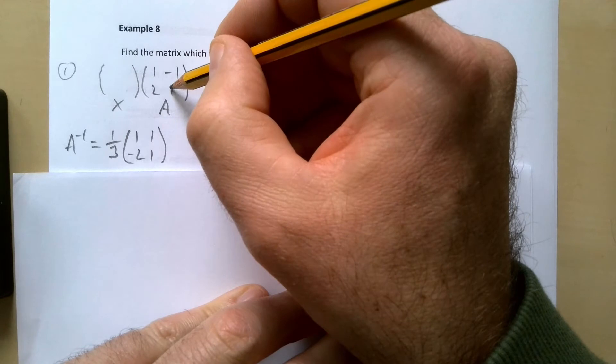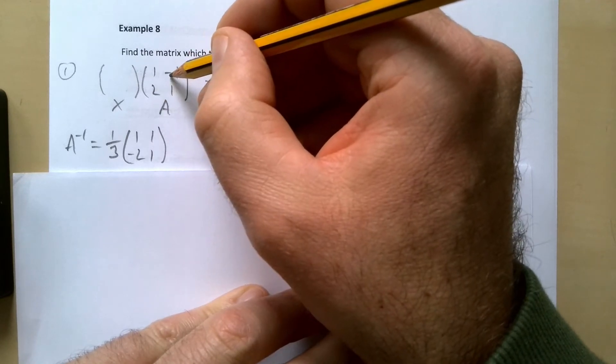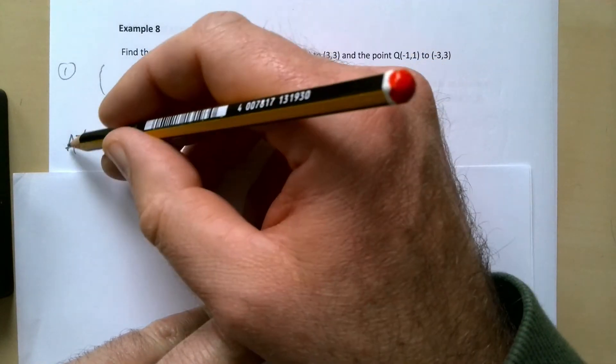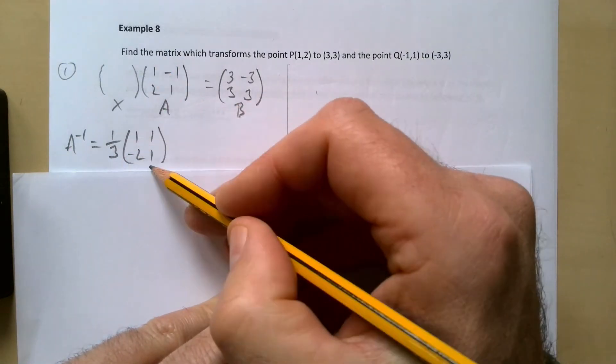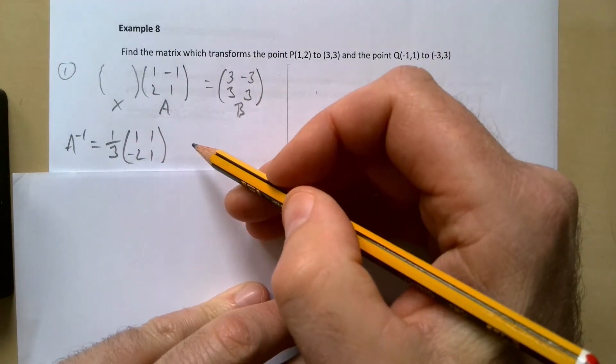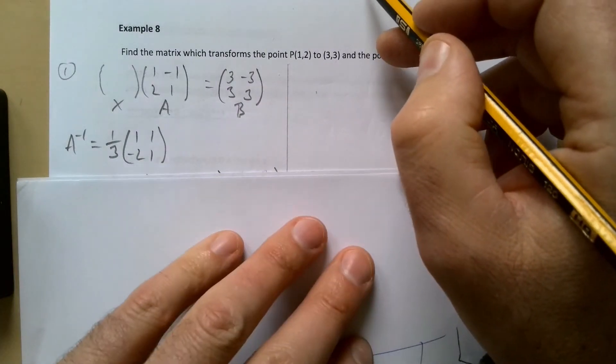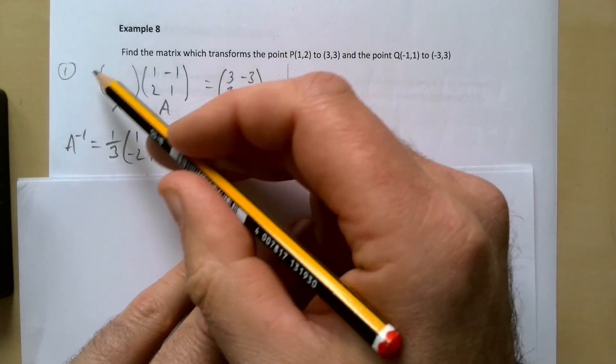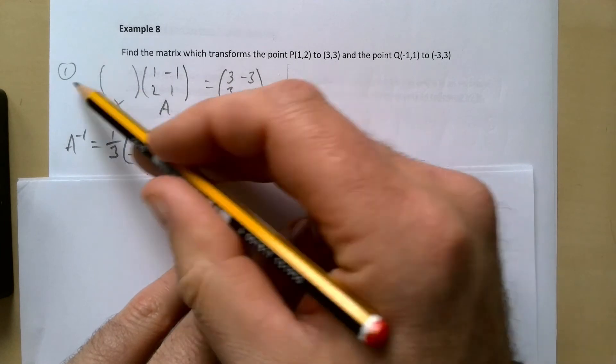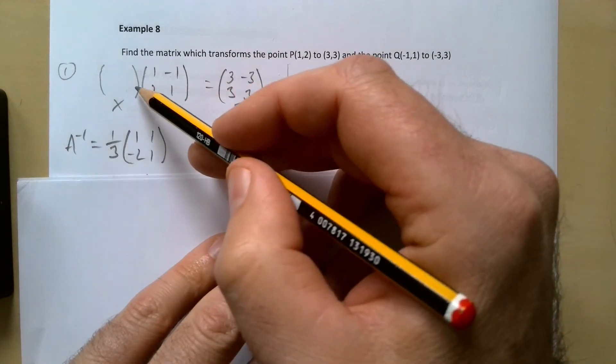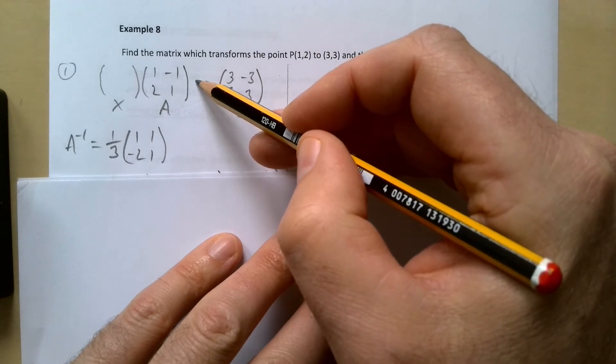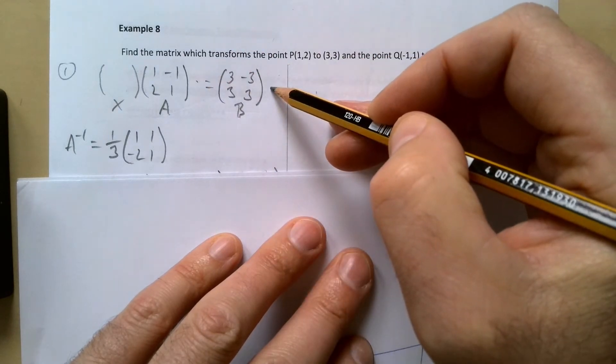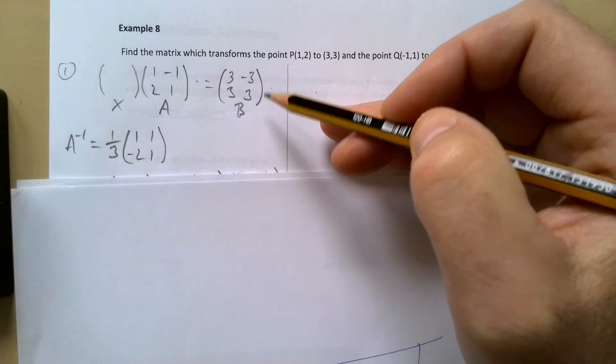So find the matrix inverse of A. Find the determinant: 1 times 1 gives me 1 minus minus 2 so that's going to be 3. So determinant is obviously 1 over 3, change these two around and change the signs of these two. Now I need to be very careful about which way of multiplying this through because if I stick the A inverse at the front that's going to mess this bit up. So I'm going to multiply on this side here.